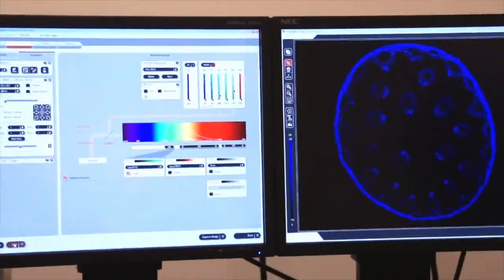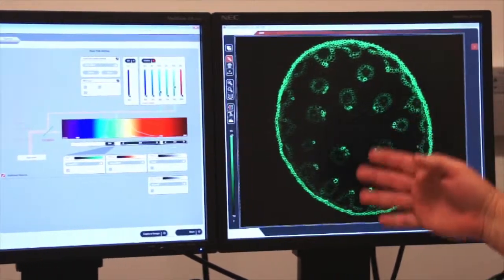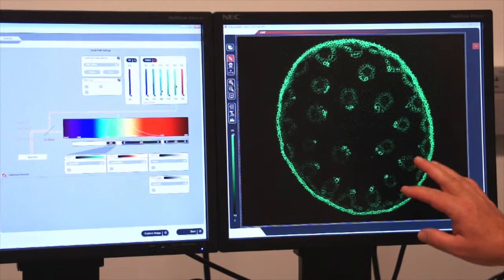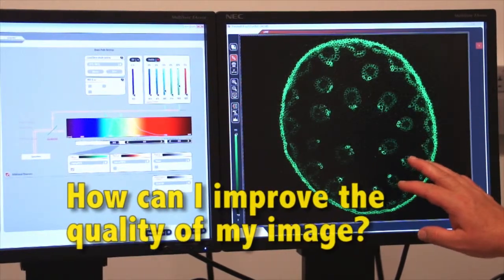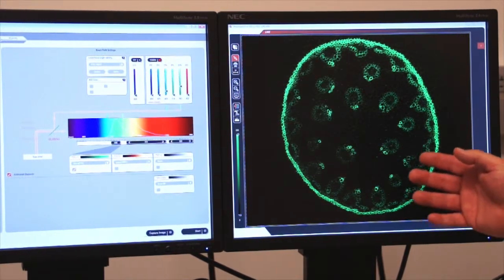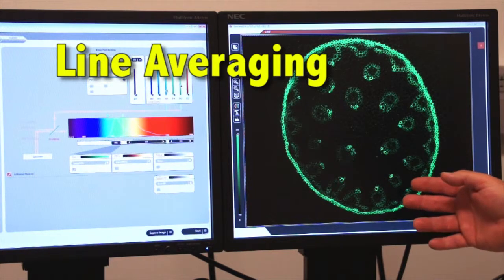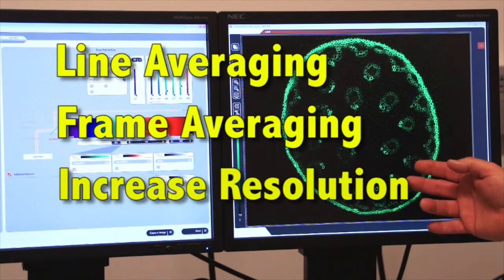Let's collect a live image on our screen. And as you can see, I have a fairly well illuminated image, but it's a little bit grainy. How can I improve the quality of my image? There are several ways to improve the quality of my image. One is to use line averaging. The other is to use frame averaging. And finally I can increase my resolution as well.